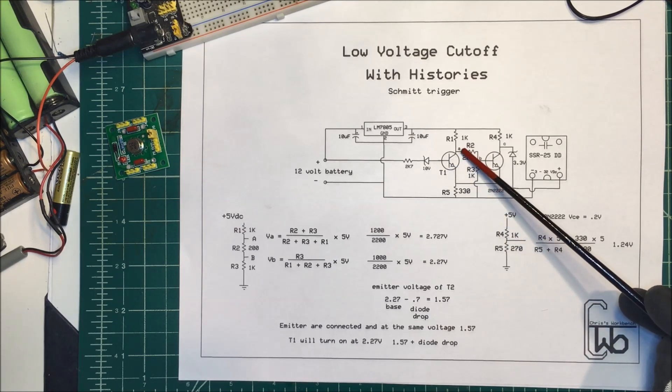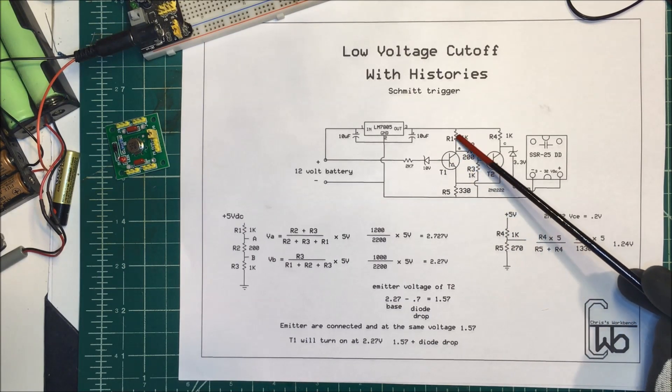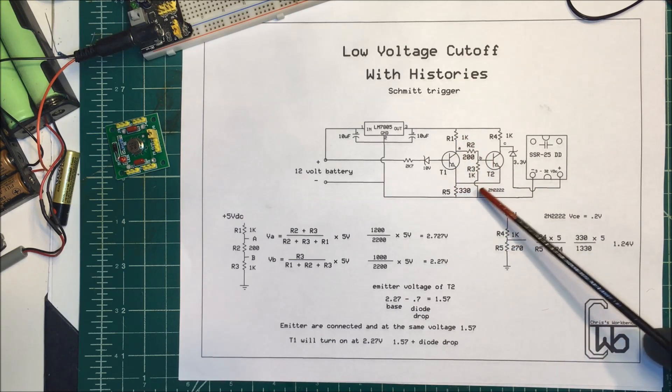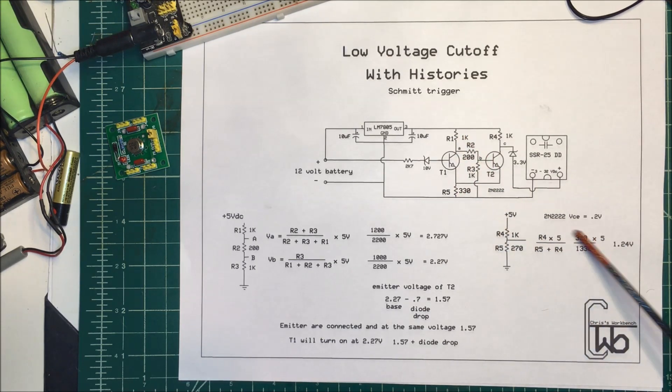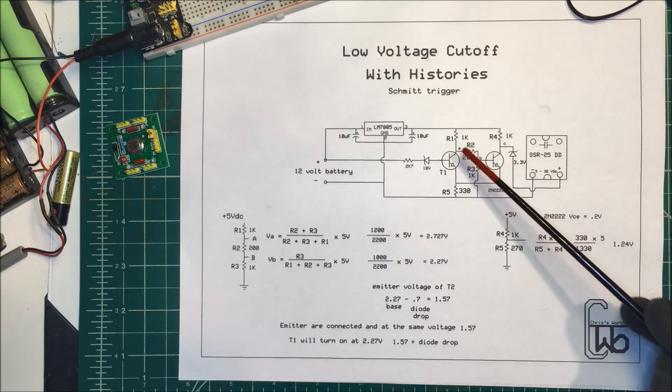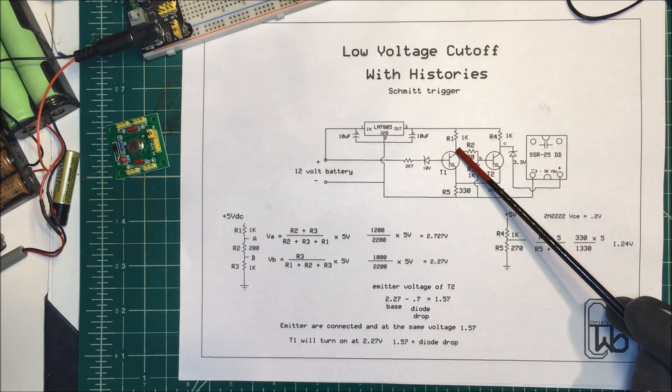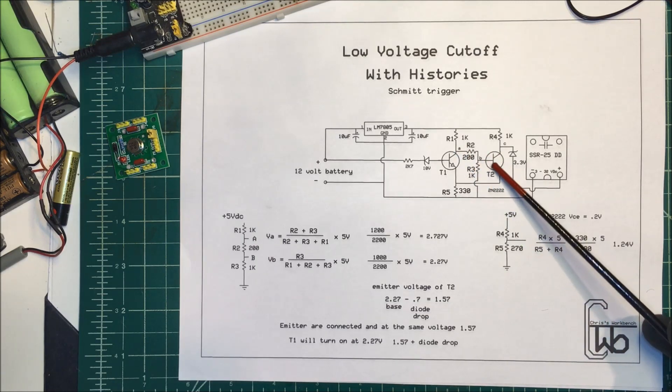Now at this point I have a 1k and a 330 ohm resistor here and we use the same formula here and it comes out that it's 1.24 volts at this point here. Now there's not enough voltage here to turn this transistor on so this is going to be off.